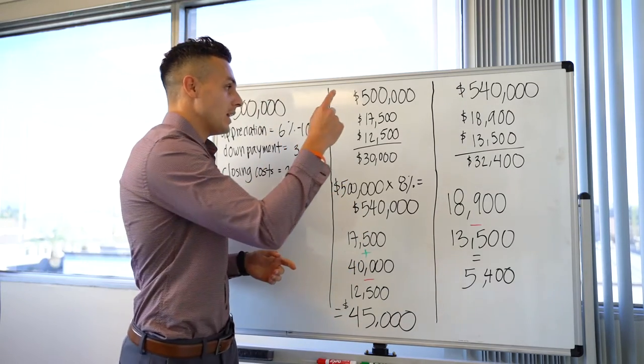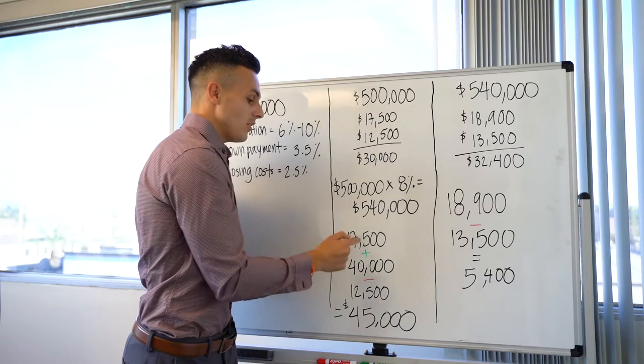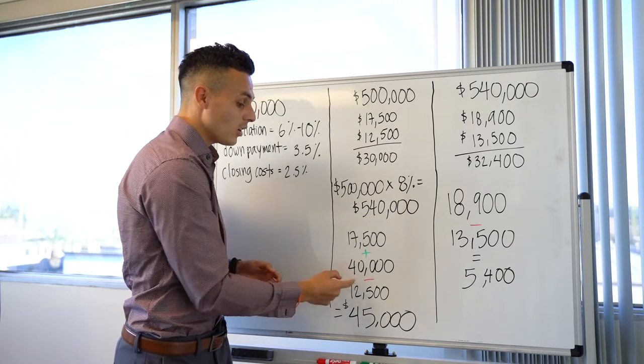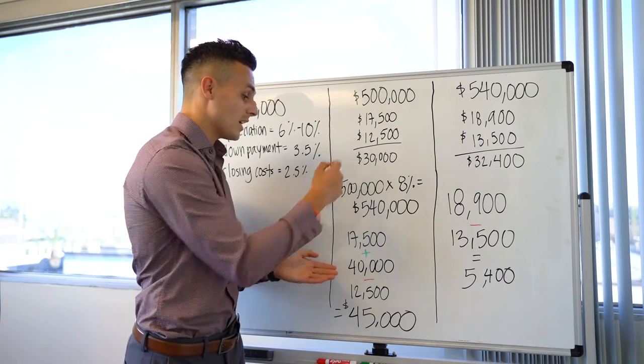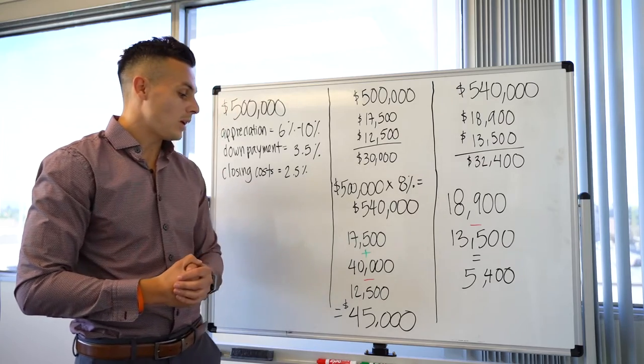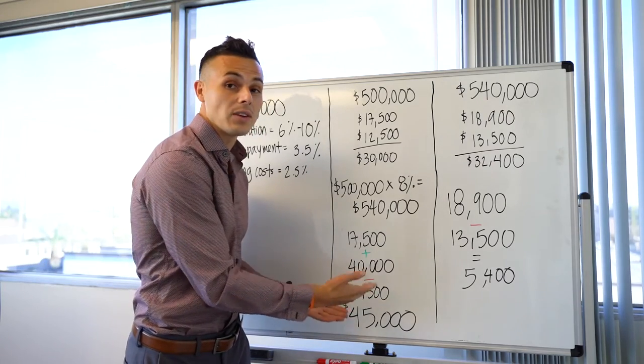If we add the down payment of $17,500 plus the appreciation for the year of $40,000, then subtract the closing costs, that's an expense of $12,500, that leaves you with a net of $45,000.